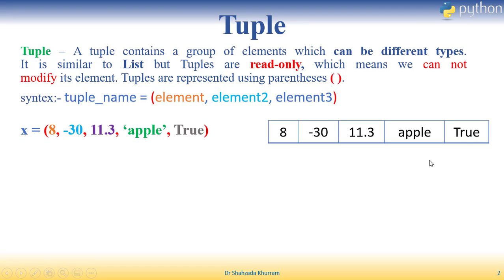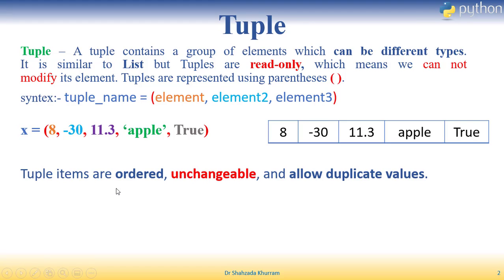Backend pe woh is tarah data ko store kar leta hai. Tuples items are ordered, unchangeable, and allow duplicate values. Jo tuples ke andar hum elements store karte hain, woh always ordered mein hote hain — jis order mein store ki hain, usi order mein hum unko recall karwa sakte hain. Aur yeh unchangeable hain, yani hum isko change nahi kar sakte. Duplicate values bhi allowed hoti hain.